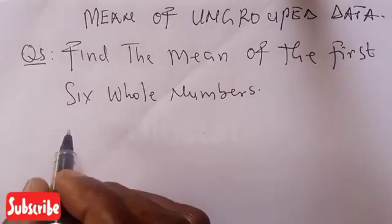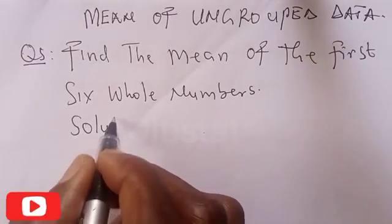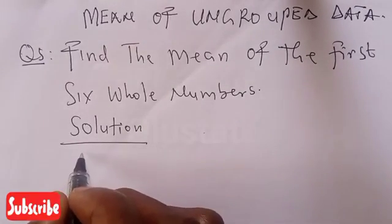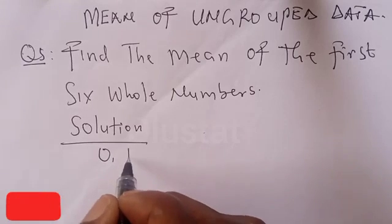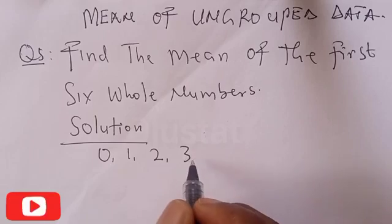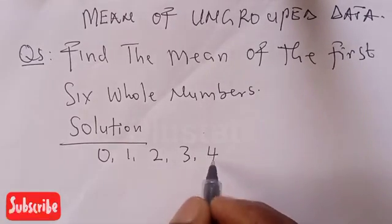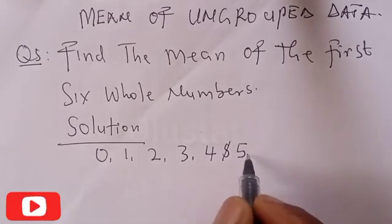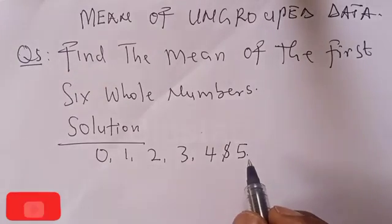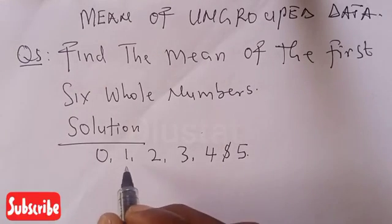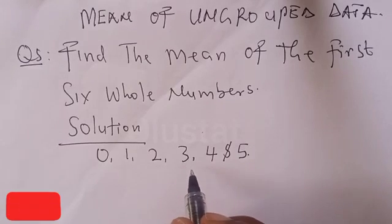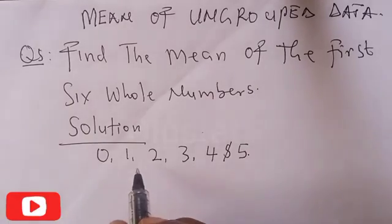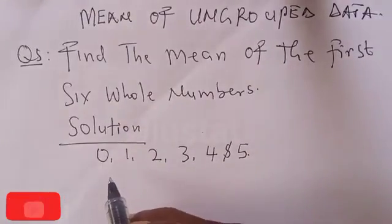Solution. The first 6 whole numbers are 0, 1, 2, 3, 4, and 5. And here are the observed values — that is the corresponding number of observations.